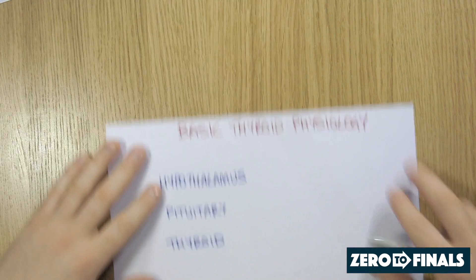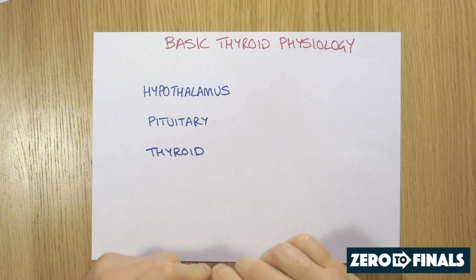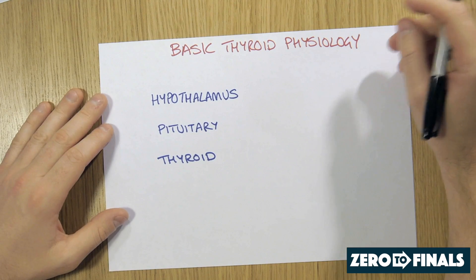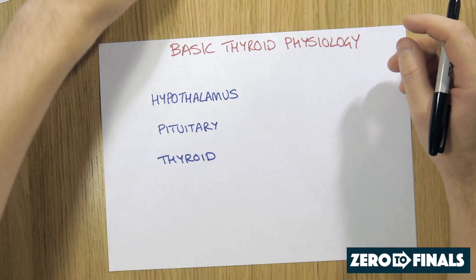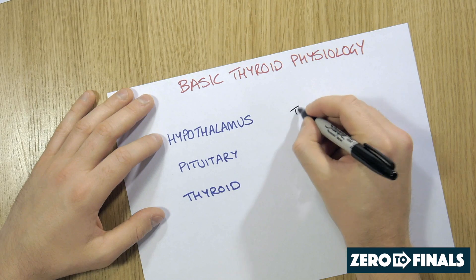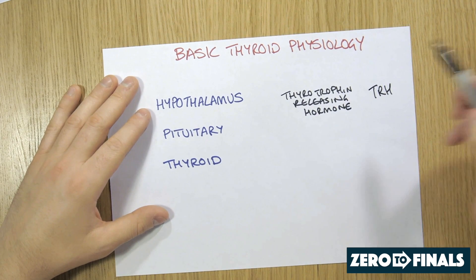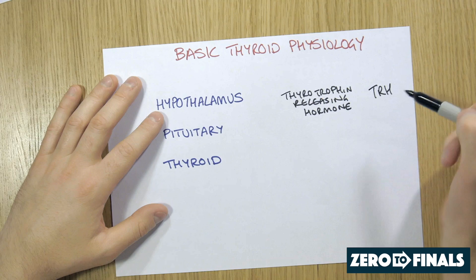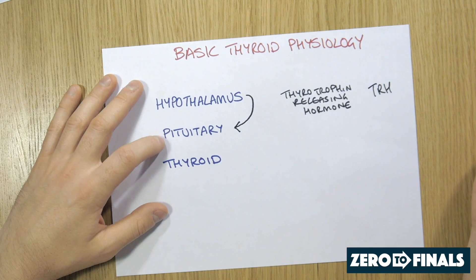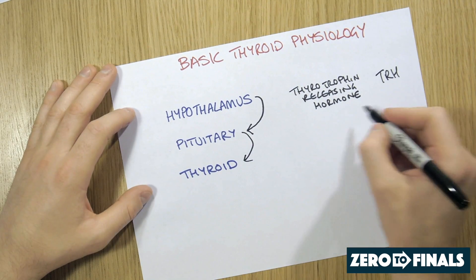I'm going to move on to the feedback mechanism by which the thyroid hormones are produced. The ladder starts at the top with the hypothalamus — this structure that regulates a lot of things in the middle of your brain — and it produces something called thyrotrophin-releasing hormone. For the sake of this video, I'm going to call this hormone TRH. So the hypothalamus produces TRH, and this then travels in the blood down to the pituitary gland, where it stimulates the pituitary gland to produce something called thyroid-stimulating hormone, or TSH.